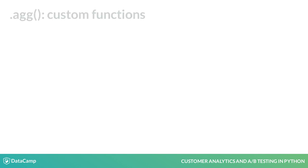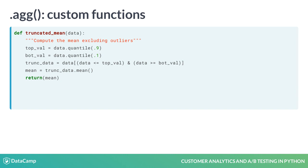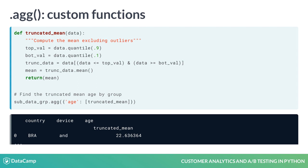Another great flexibility of the Agg method is that we can also pass our own custom functions to aggregate over, not only built-in ones. Here is a function that finds the truncated mean value — that is, it removes the top and bottom 10% before averaging. We can aggregate our age over the country and device groupings with this function. The only distinction is that when inputting a custom function, we do not want its name in quotations as we did for built-in functions.